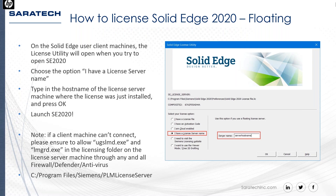When you install Solid Edge and first launch it, a pop-up will say you need to license it. Hit OK and it opens the license utility. Choose the fourth option — 'I have a license server name' — then type in the host name of the license server, for example 'lic-server-01'. Hit OK, and it's ready to go. This creates the SE License Server environment variable automatically, updating to show the path to the license server machine.